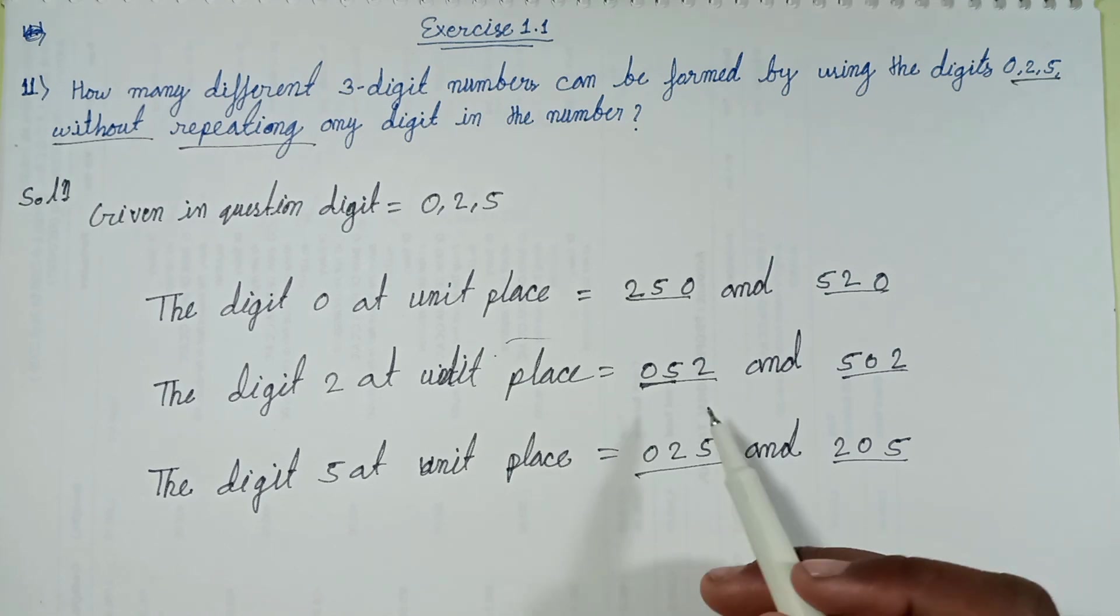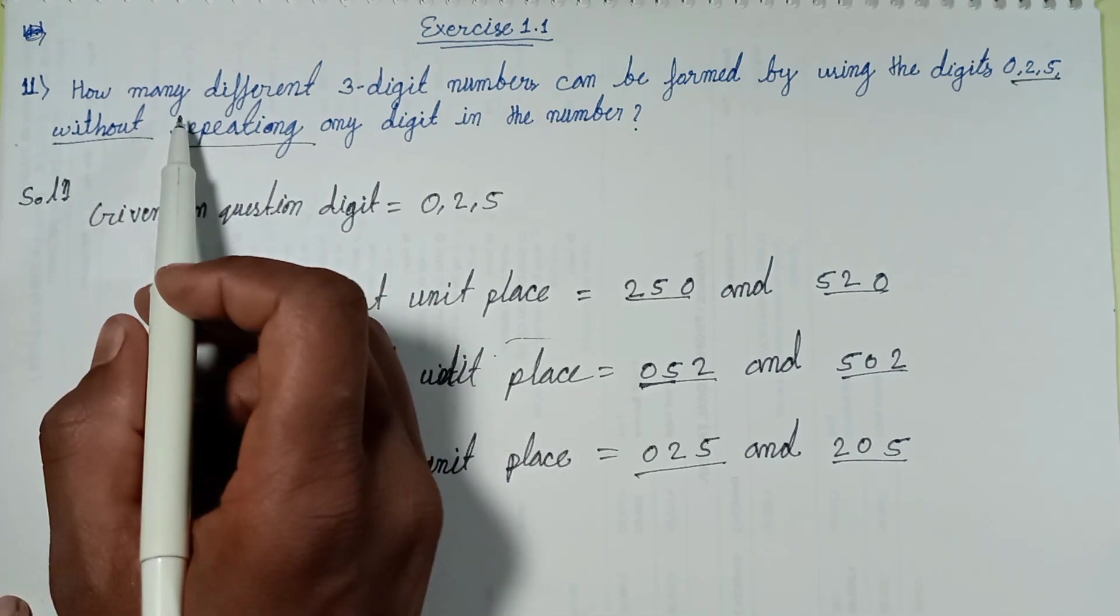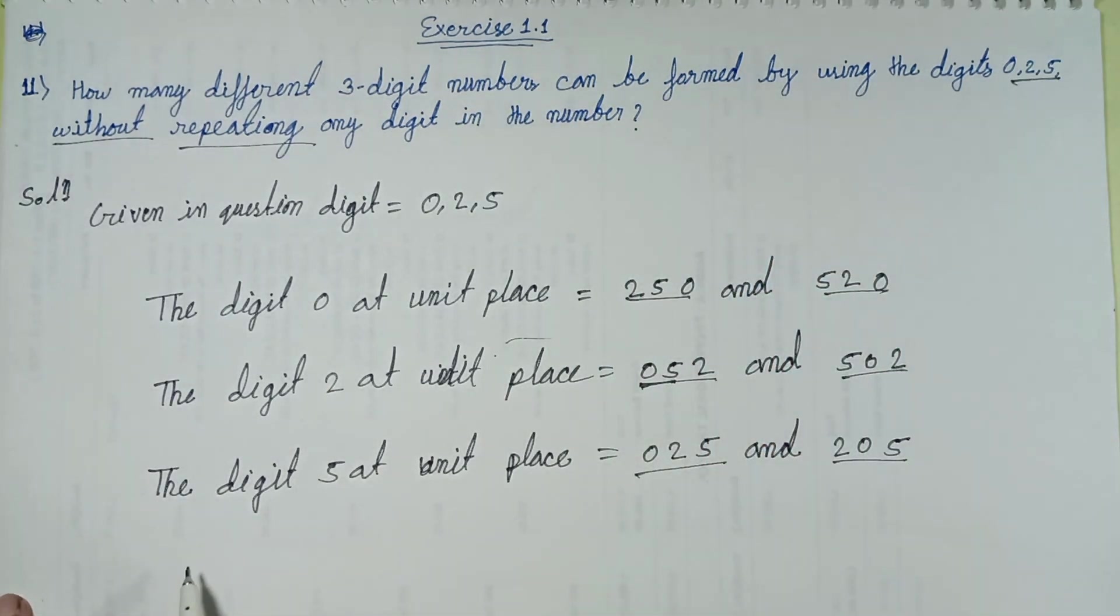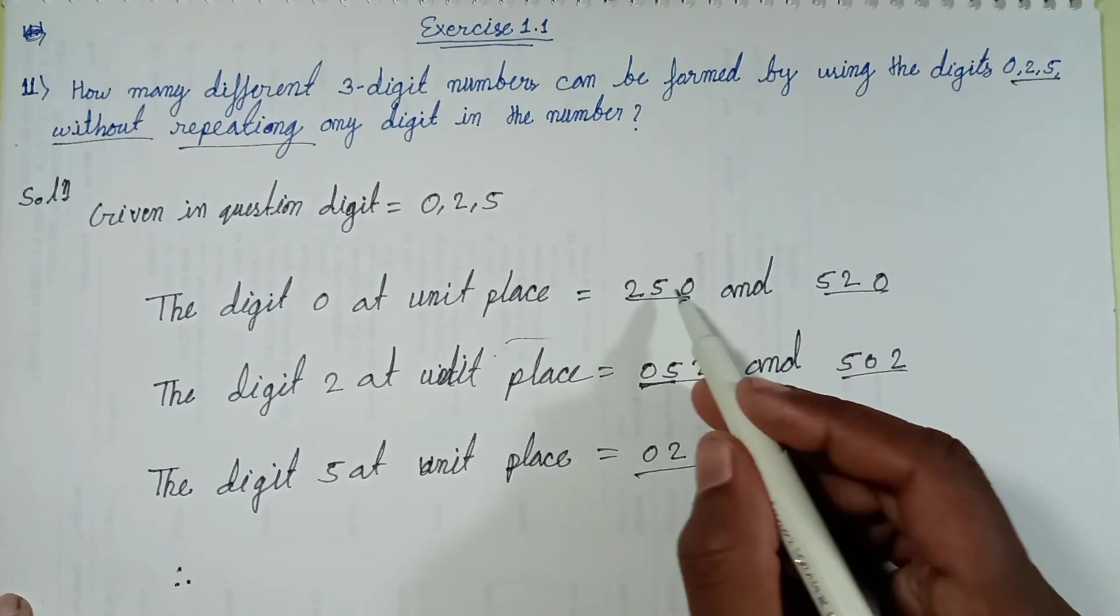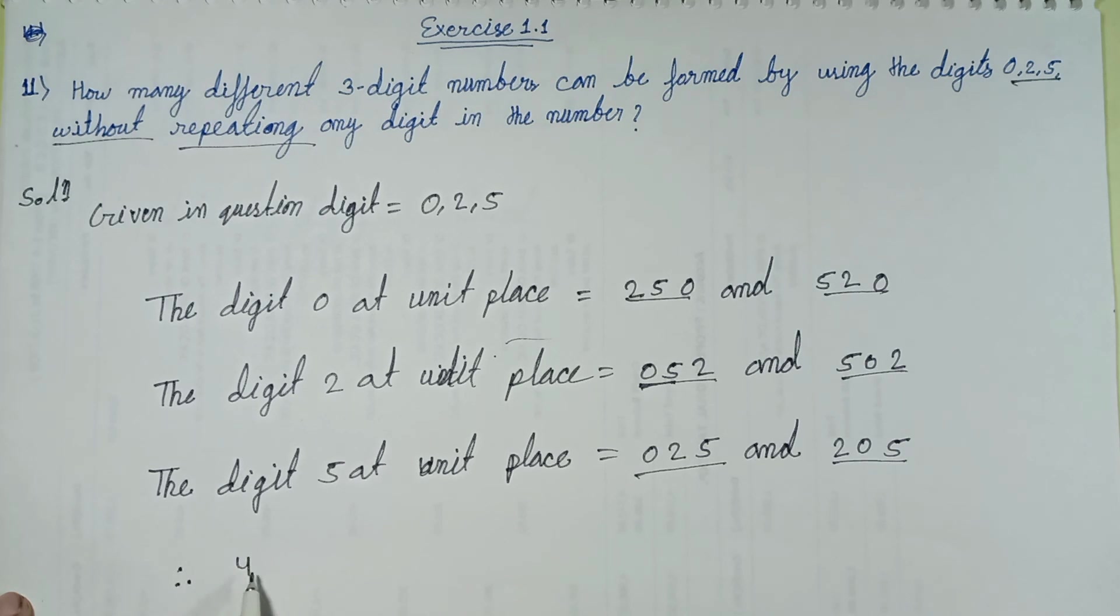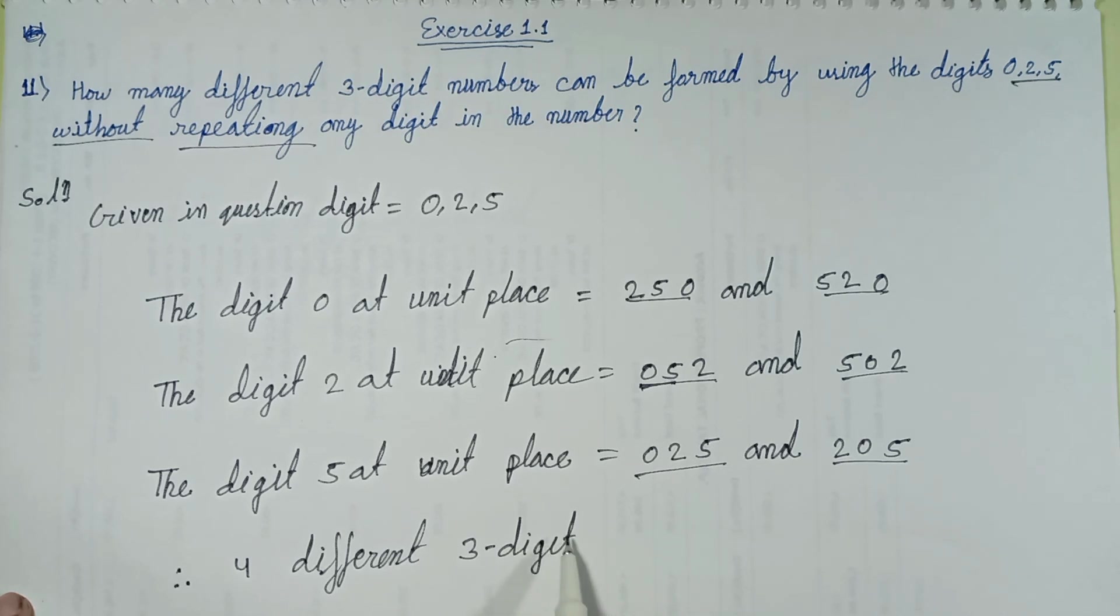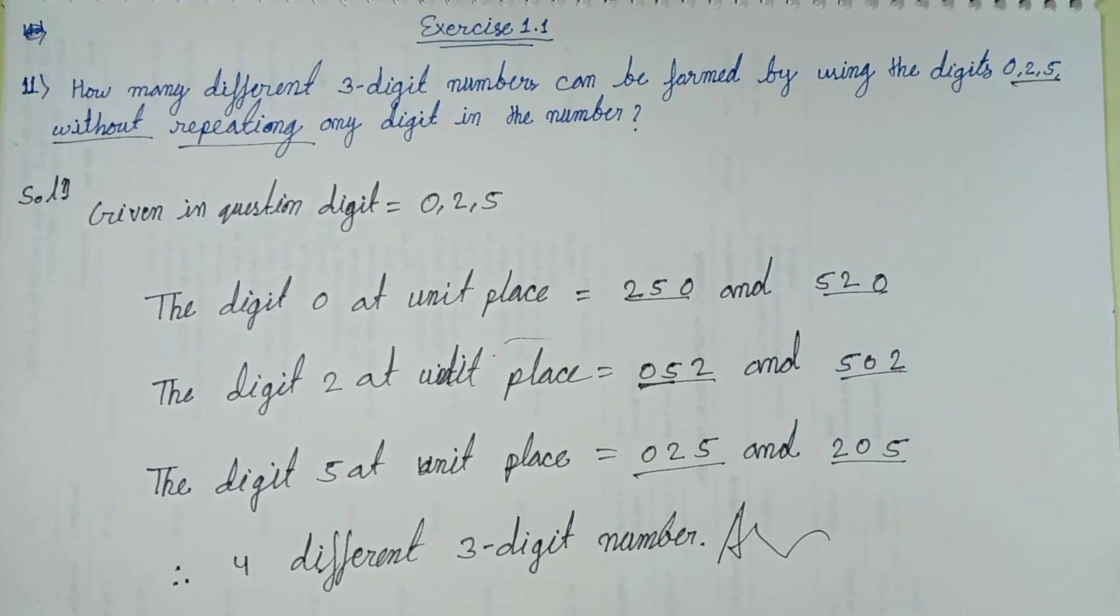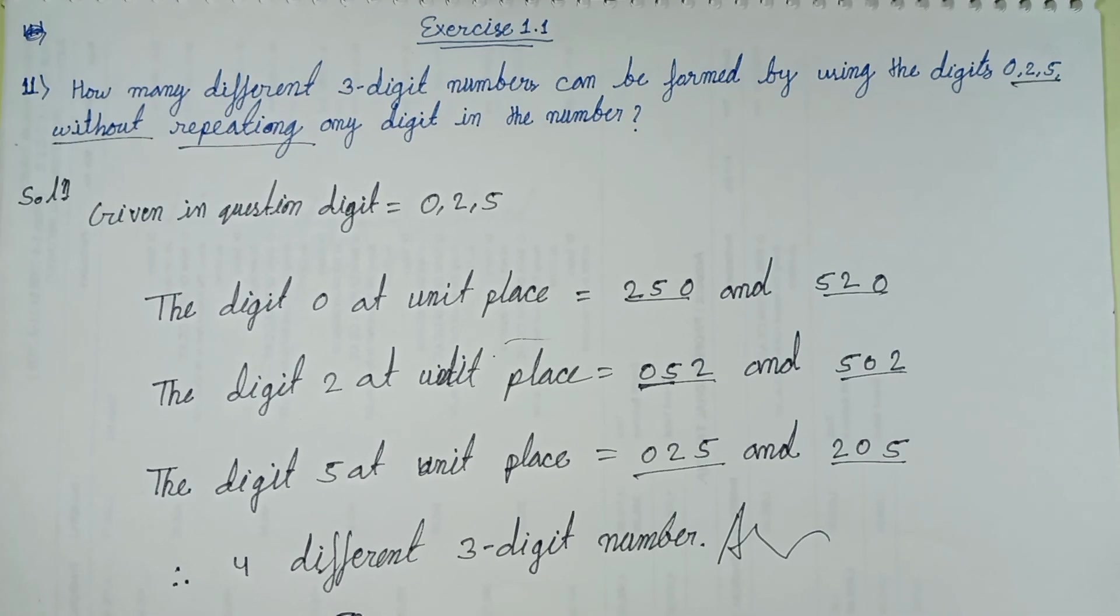How many different 3-digit numbers can be formed by using this digit? Therefore, 1, 2, 3, 4. Four different 3-digit numbers. This is my answer: four different digit numbers, namely digits 250, 520, 502, and 205.